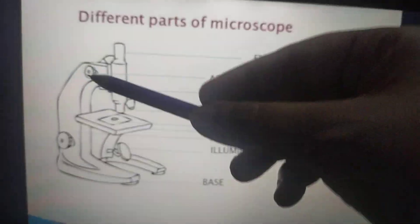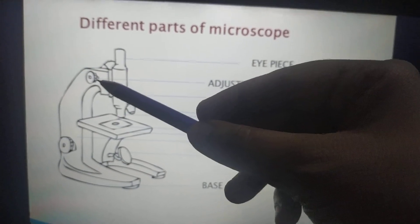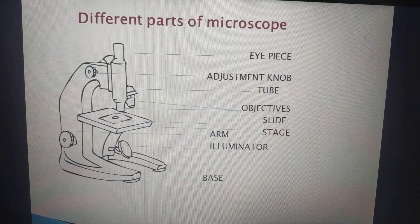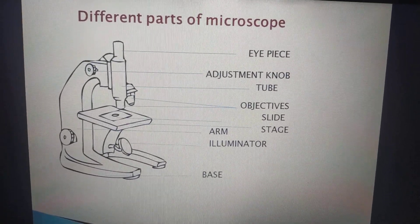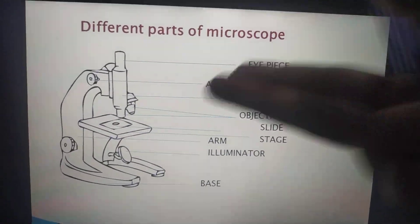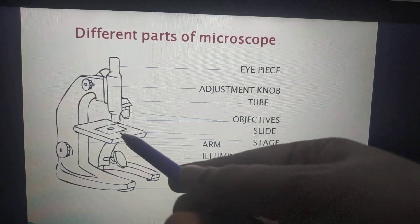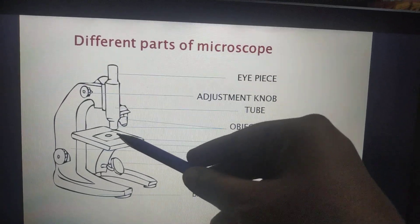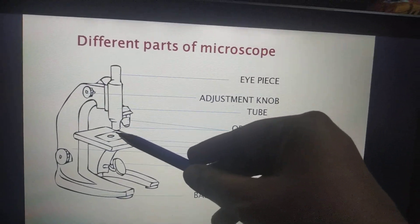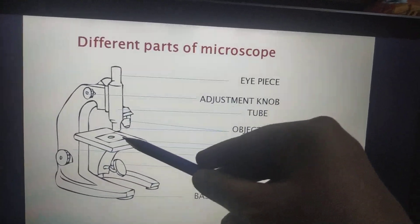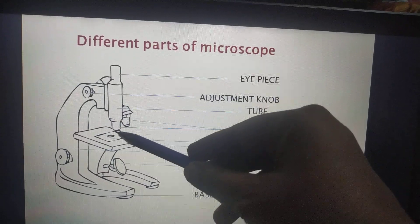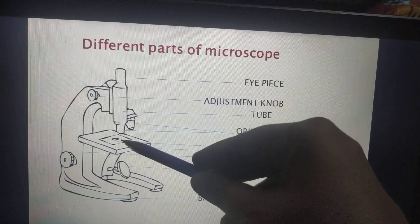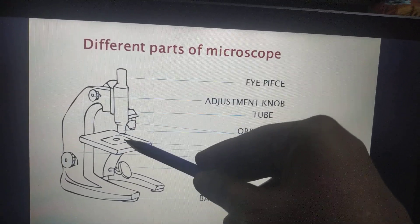Next is the knob — an adjustment knob which is used to adjust the level of the eyepiece, or the distance between the objective lens and the material which we want to see. This adjustment knob is used to maintain the gap between the objective lens and the stage area.